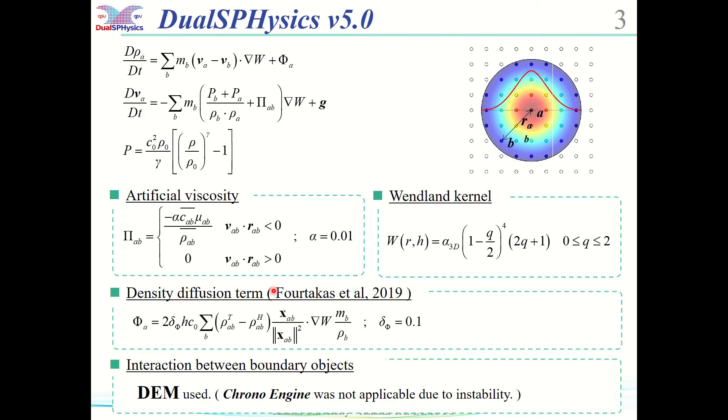This study uses DualSPHysics version 5. Distinct element method is used to calculate collisions between rigid bodies. We considered using Project Chrono, but gave up when we had a problem with a block going through a mound in a preliminary test.